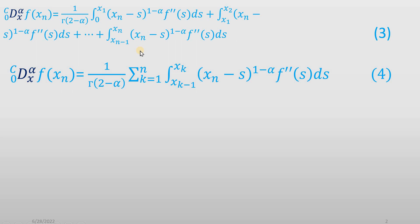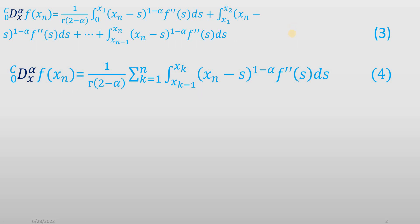I have written equation 3 in compact form using summation notation. If you substitute index k equal to 1, the lower limit gives x_0 and the upper limit gives x_1, recovering the first term of equation 3. In this way all terms of equation 3 are reproduced, and equation 3 can be written as equation 4.